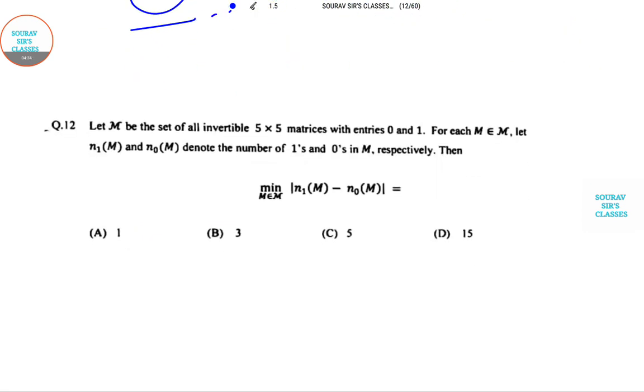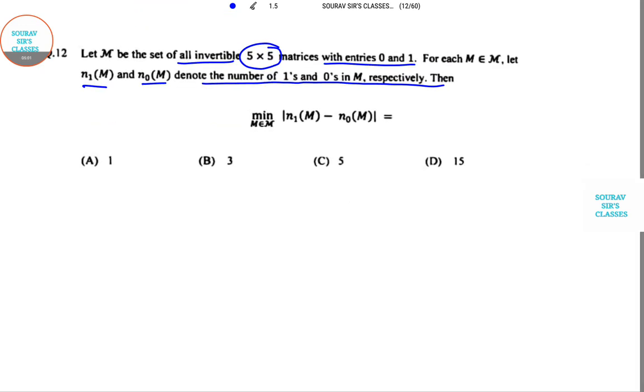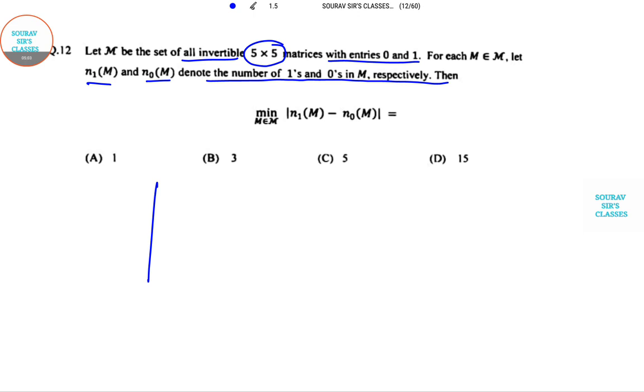Now we will go to question number 12. Let M be the set of all invertible 5×5 matrices with entries 0 and 1. It's a binary question. For each M ∈ M, let N₁(M) and N₀(M) denote the number of 1s and 0s respectively. Then what is the minimum value of their differences?